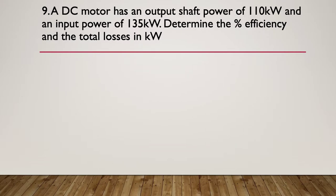Question nine, a DC motor has an output shaft power of 110 kilowatts and input power of 135 kilowatts. Determine the percent efficiency and the total losses in kilowatts.